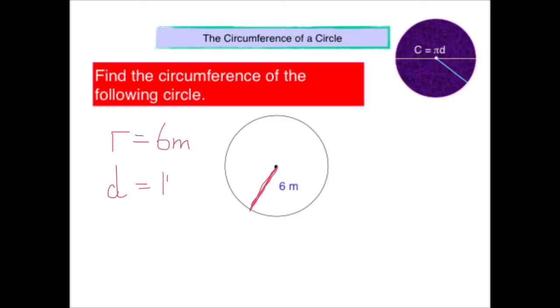So if the radius is 6, the diameter must be 12. Once we know what the diameter is, then we can start by writing our formula down again. C is equal to pi d. The circumference is pi times the diameter. And let's now fill it in. The circumference is pi times 12.